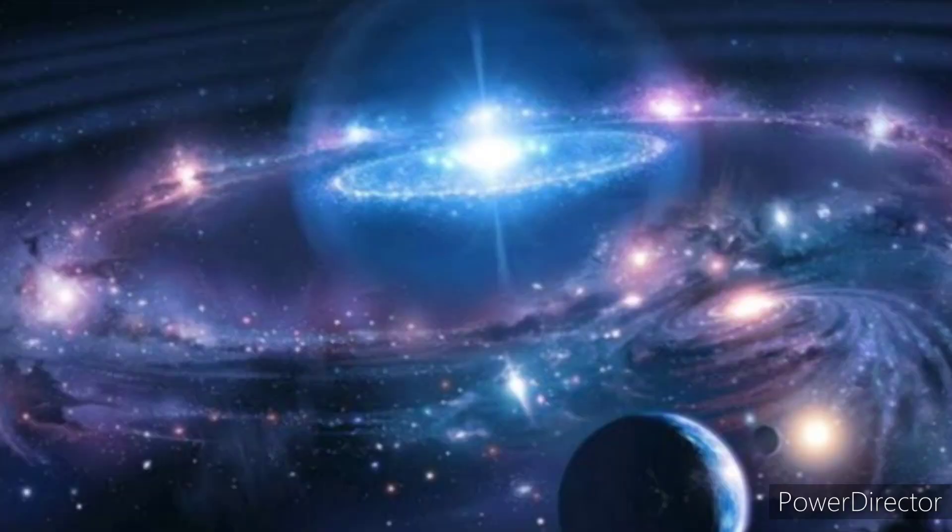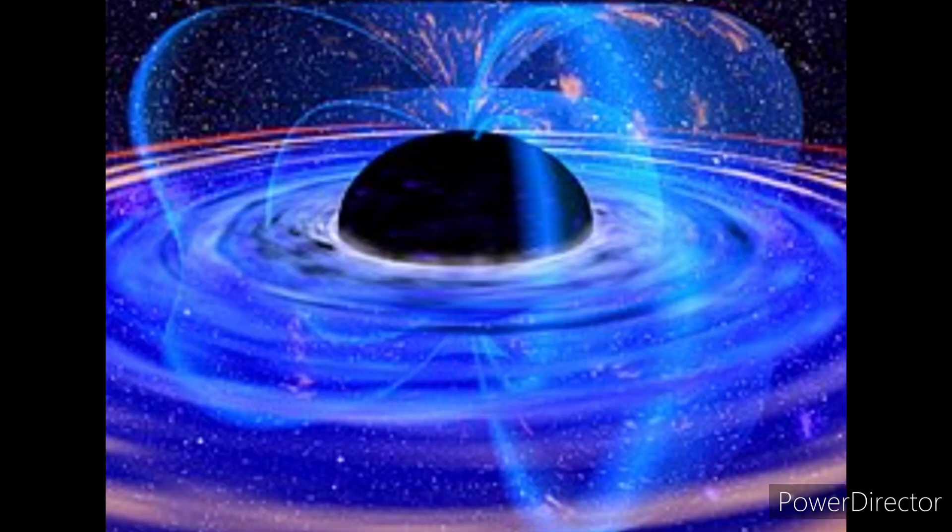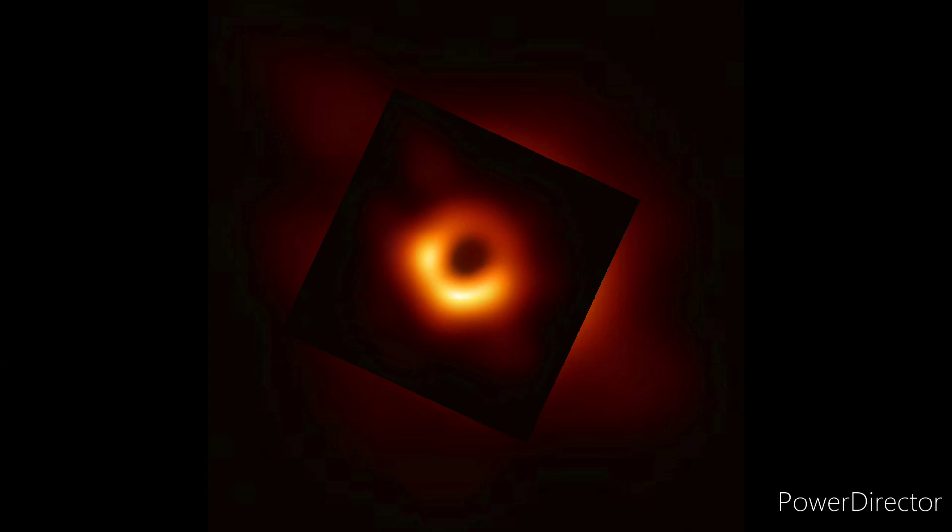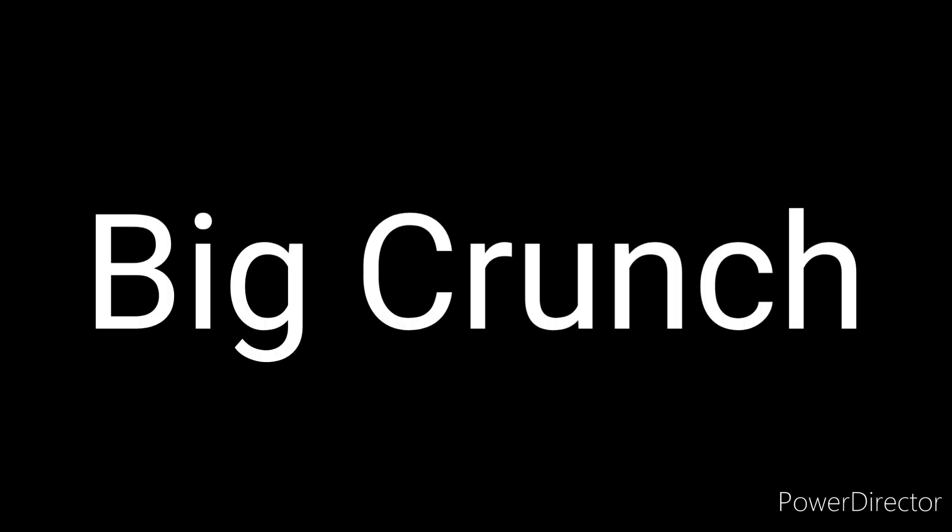With enough matter, gravity would eventually stop the expansion of the universe, causing the universe to crash inward. Later on, astronomers added that when the universe crashes on itself, it shall collapse to an infinitely dense state, or even to a gargantuan black hole. As the universe is shrinking, all the black holes collide with each other, forming a single black hole vacuuming the universe. That's what scientists call the Big Crunch.